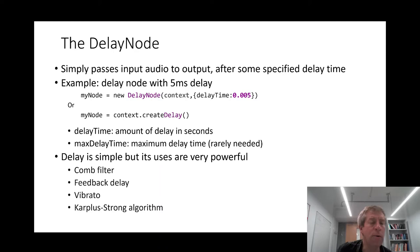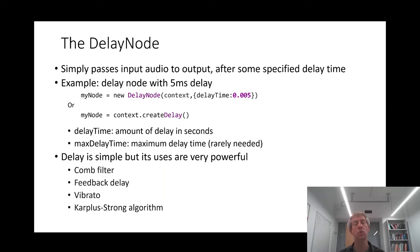But its uses are very, very powerful. In the book 'Working with the Web Audio API', we give four different examples showing some pretty cool things you can do with delay. Those include comb filtering, feedback delay, vibrato, and the Karplus-Strong algorithm. For the purpose of this short lecture though, we'll concentrate just on the first two of those — the comb filter and feedback delay.